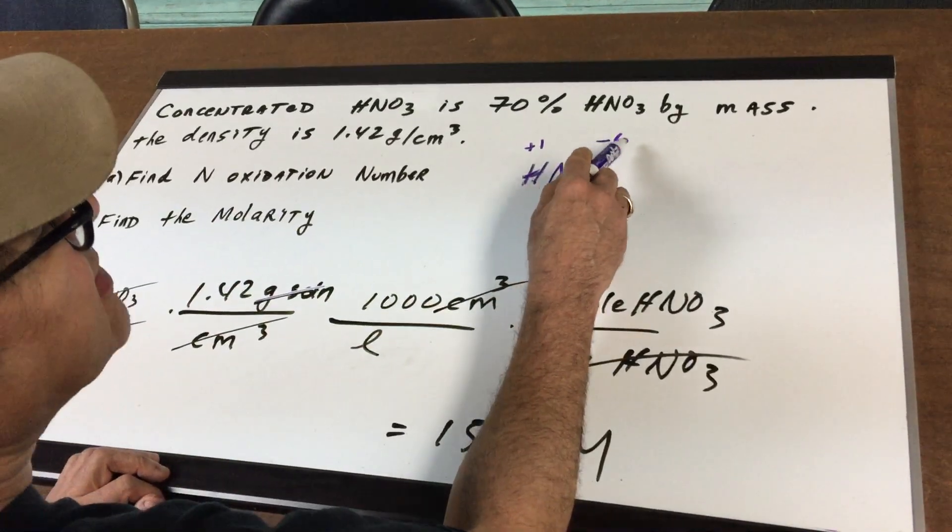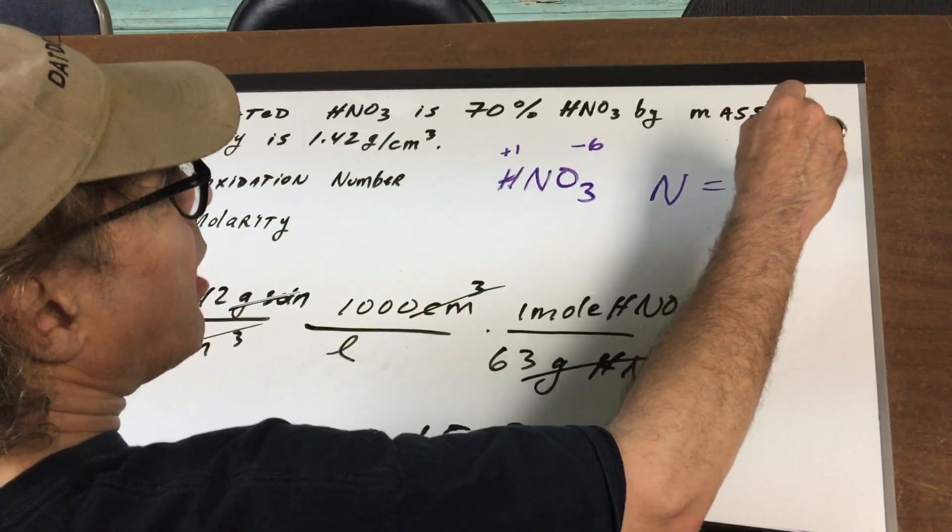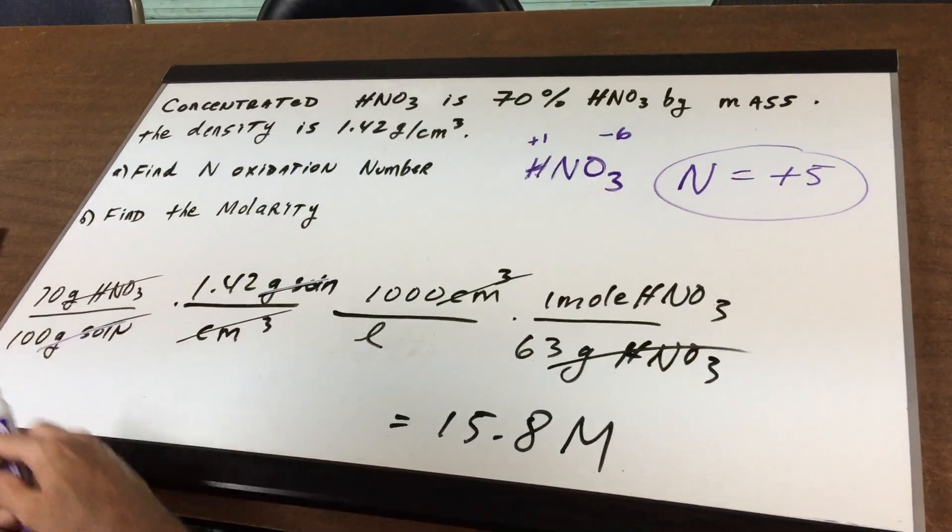A plus one and a minus six is a minus five. So to balance it out to zero, we get nitrogen as plus five. Part B.